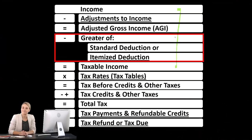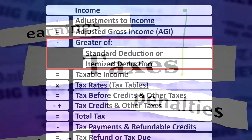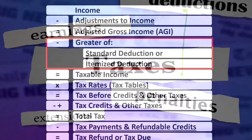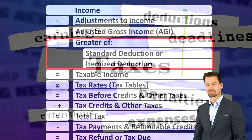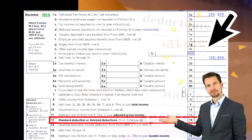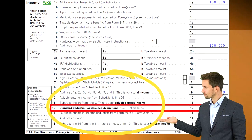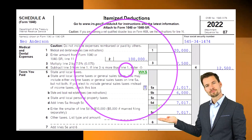Then we have what might be called the below-the-line deductions, which is either the standard deduction or the itemized deduction. We only take the itemized deduction if it is greater than the standard deduction. So now we're focusing on some of those itemized deductions. On page one of Form 1040, line 12, you choose between the standard deduction or itemized deduction. This is Schedule A.